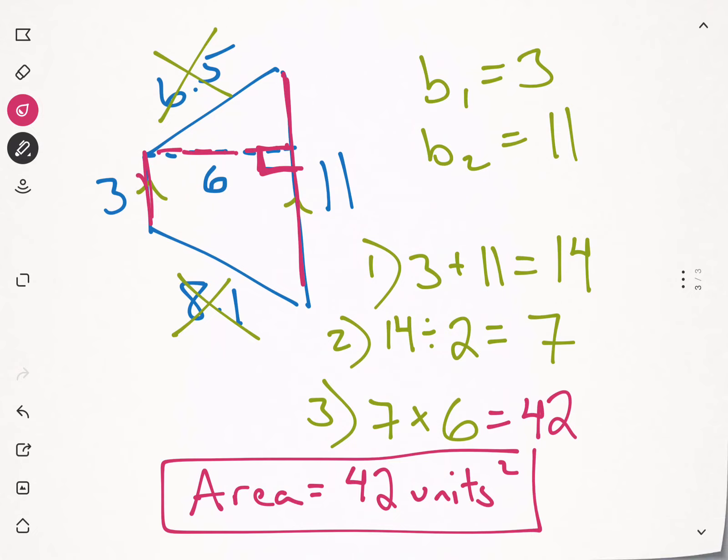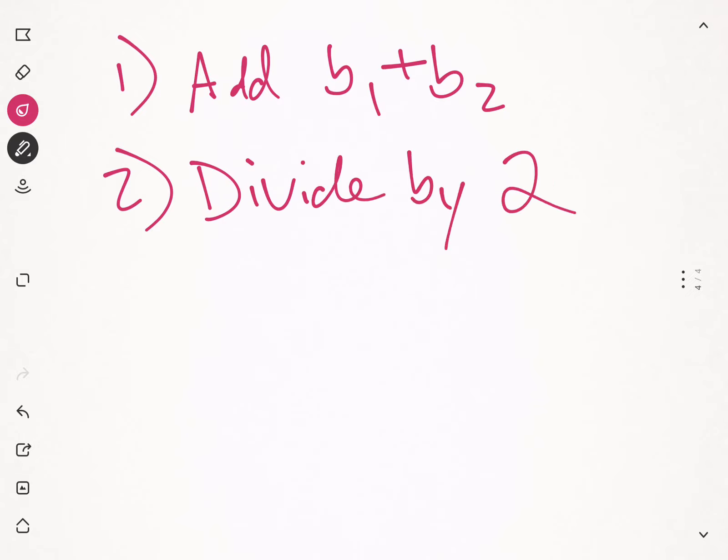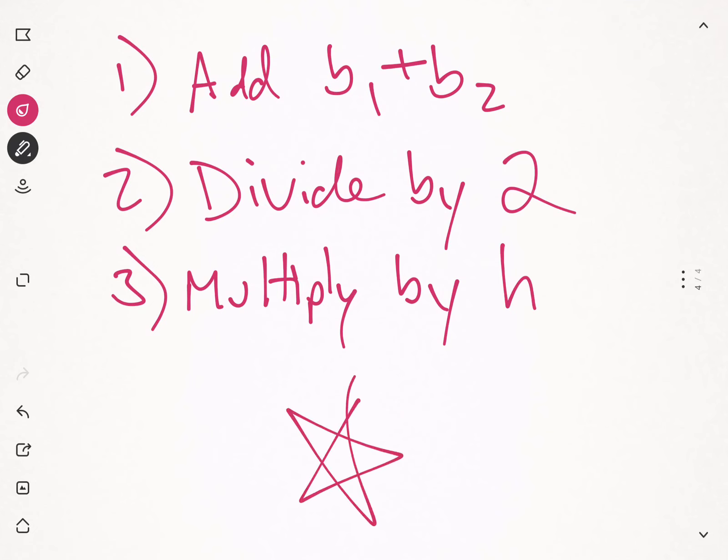So let's review. Step one, add base one plus base two. Step two, divide by two. And then step three, multiply by the height. Perfect. You got it Libby? Yes. Excellent.